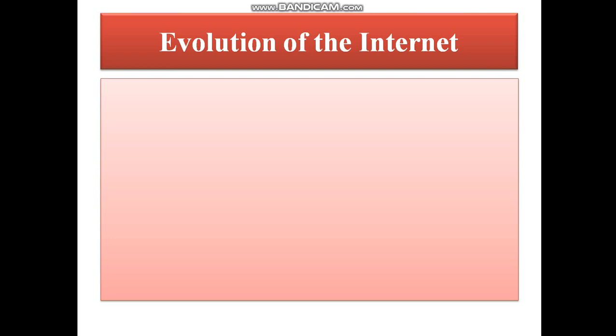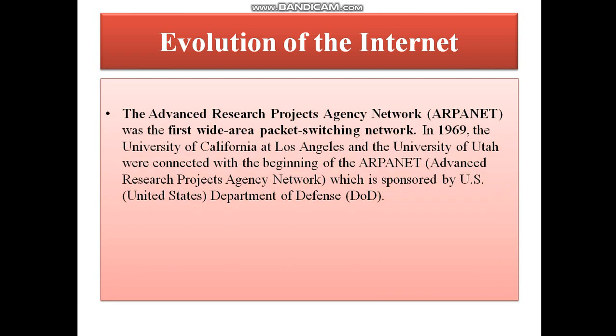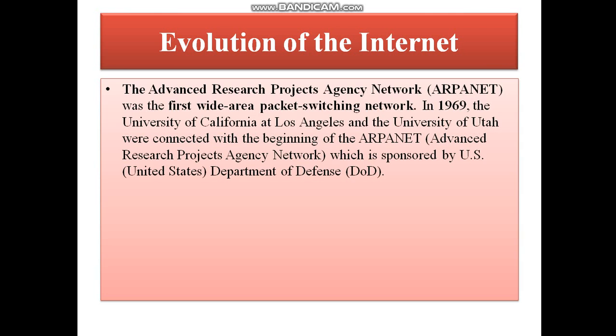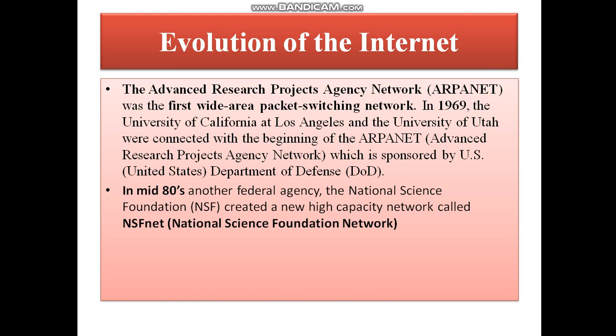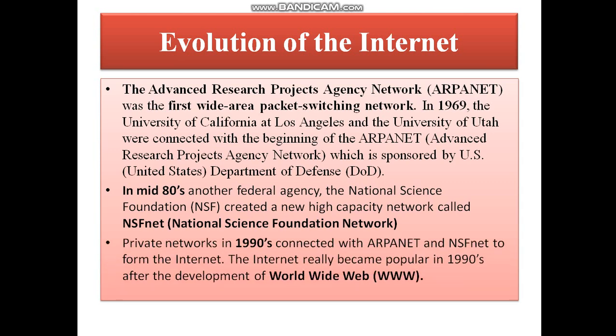Next is the evolution of the Internet — how did the Internet come up? First was ARPANET, the Advanced Research Projects Agency Network. That was the first wide-area packet switching network. Data travel in the form of packets, and ARPANET was the first network to use this technology, found in 1969 by the US Department of Defense. Next, in the mid-80s, NSFnet — the National Science Foundation Network — which was better than ARPANET, was founded. Later in the 1990s, ARPANET, NSFnet, and private networks together gave rise to the Internet, or the World Wide Web, that we use today.